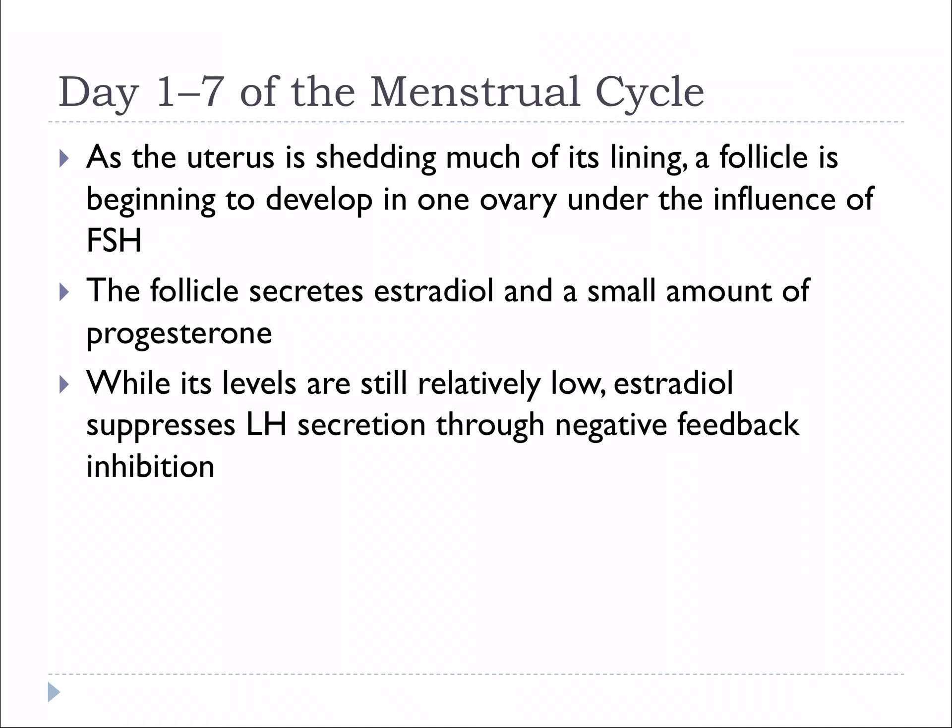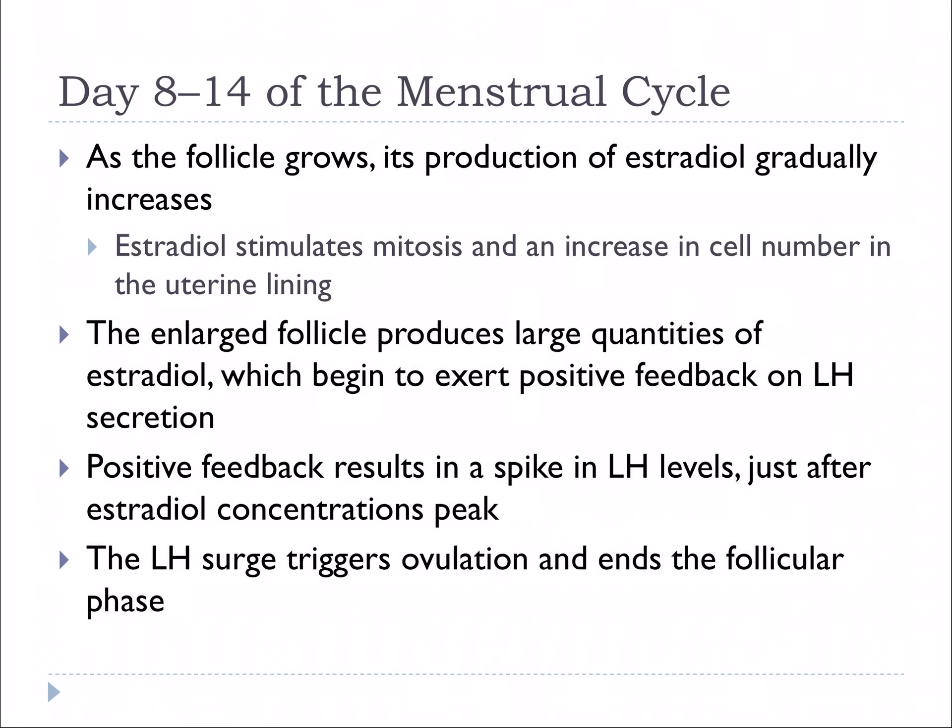Looking at this by days: on days one to seven, menstruation occurs as the uterus sheds its lining. A follicle begins to develop in one ovary under the influence of follicle-stimulating hormone. The follicle secretes estradiol and small amounts of testosterone. While estradiol levels are still relatively low, estradiol suppresses luteinizing hormone secretion through negative feedback inhibition.